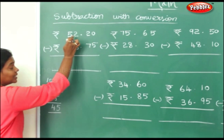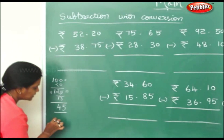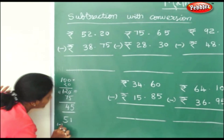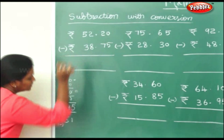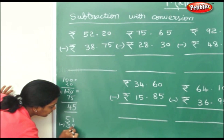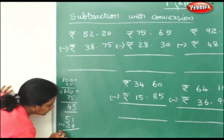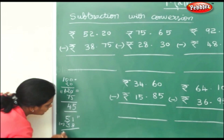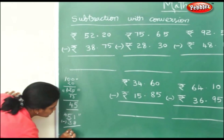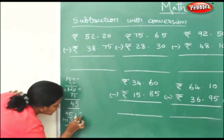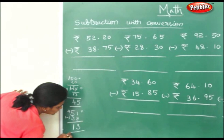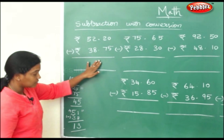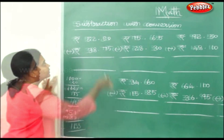Since I have taken 1 rupee, this becomes 51 rupees. So 51 rupees minus 38 rupees: this becomes 11, this becomes 4, so 8 minus 11 is 3. So this is 13 rupees. If you subtract this way also, you'll get the same answer.